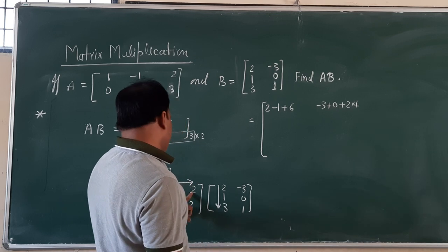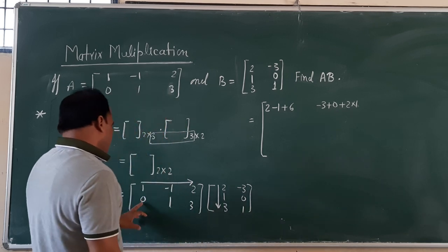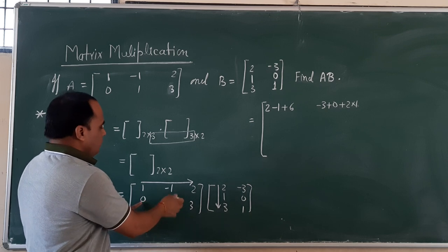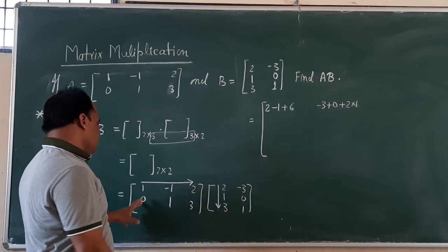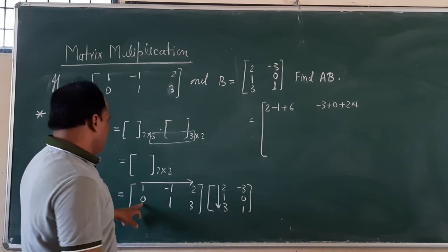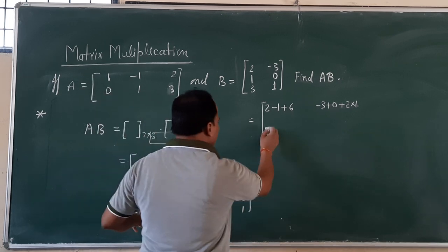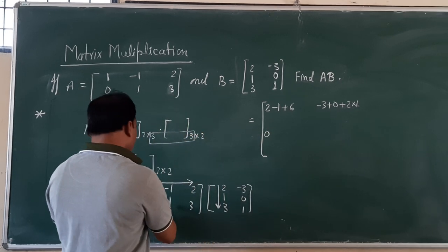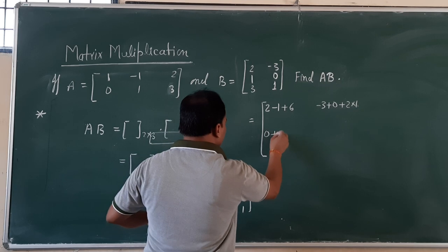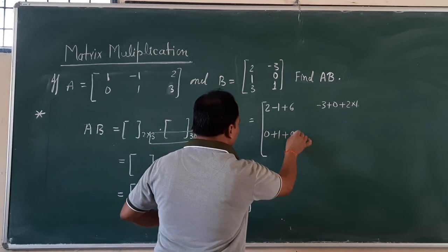Now again, proceed further. Take second row and repeat the same process as we did in first place. This 0 is going to multiply with 2 gives you 0. This 1 multiplied with 1 gives you 1. This 3 multiplied with 3 gives 9.